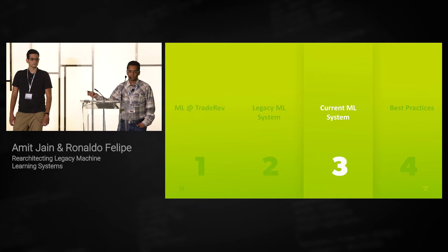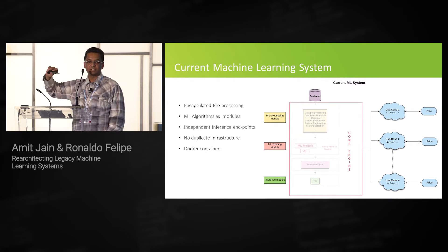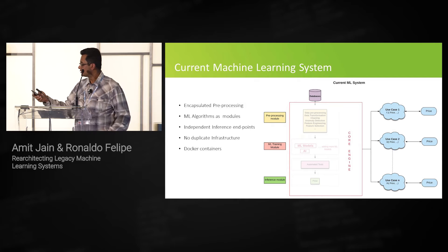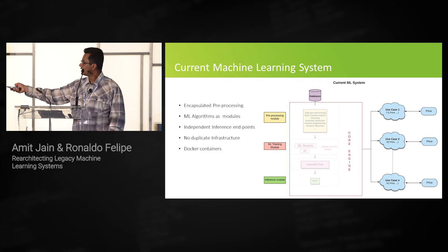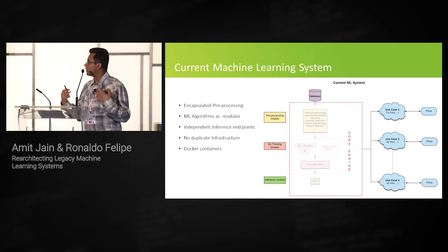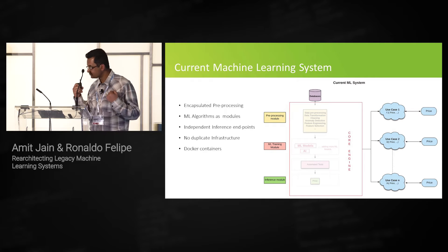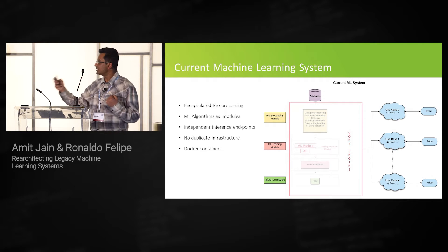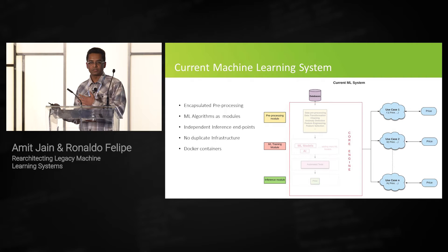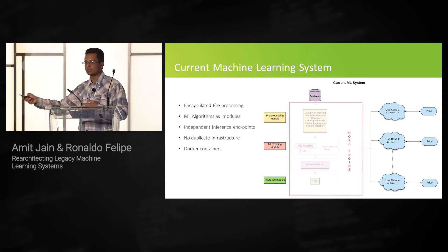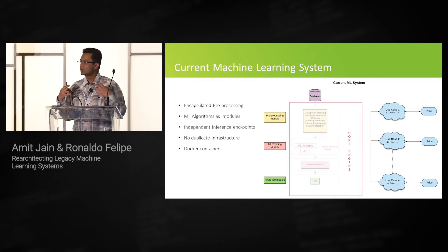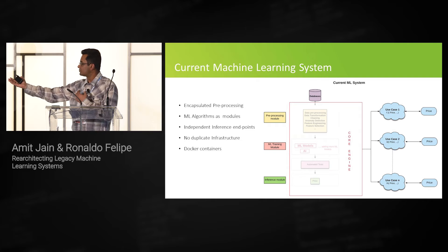We had more feature requests coming in, went back to the drawing board, thought a lot about it, and came up with the current machine learning system. At a very high level, what we have done is encapsulate all these services as modules. There's a preprocessing module for data transformations, outlier detection, and cleaning. Then we have the training module - the beauty is we are not going to add independent microservices; we are going to add modules within this module itself. You can plug and play your preprocessing and training models - XGBoost, AdaBoost, Random Forest, whatever.